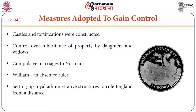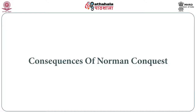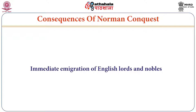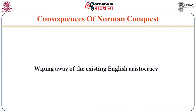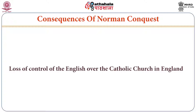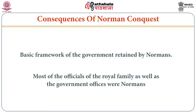Now, the consequences of the Norman Conquest: immediate emigration of English lords and nobles, sweeping away the existing English aristocracy, which was in bewilderment as they were now occupied by French masters. There was loss of English control over the Catholic Church in England. The basic framework of government was retained by the Normans. Most officials of the royal family and government were Normans, as it was total supremacy by the Normans and they had to execute their power in all spheres of life in England.